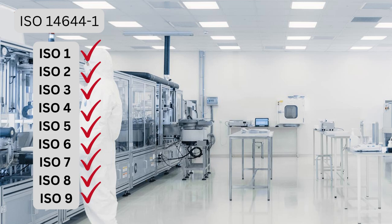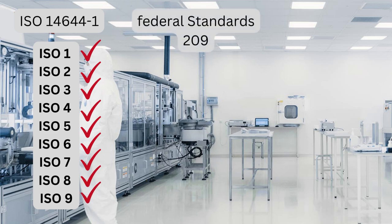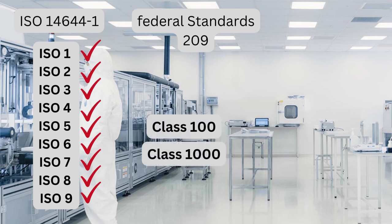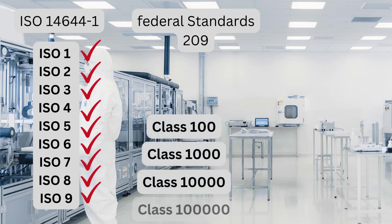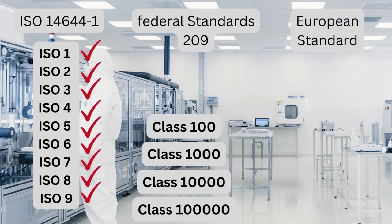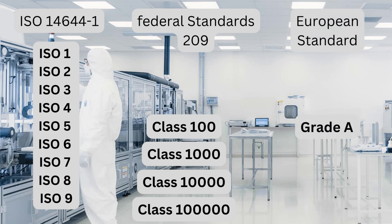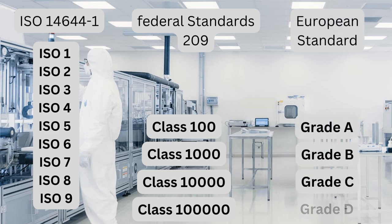According to Federal Standards 209, the classes are: Class 100, Class 1000, Class 10,000, and Class 100,000. According to European Standards, the grades are: Grade A, Grade B, Grade C, and Grade D.